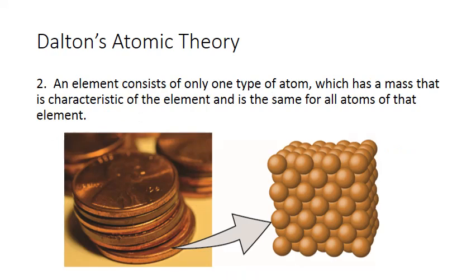So the second part of Dalton's atomic theory is that an element consists of only one type of atom which has a mass that is characteristic of that element and is the same for all atoms of that element. So if you consider copper, one of the primary elements found in a penny, Dalton's theory states that all the atoms of copper in that penny are identical to each other.